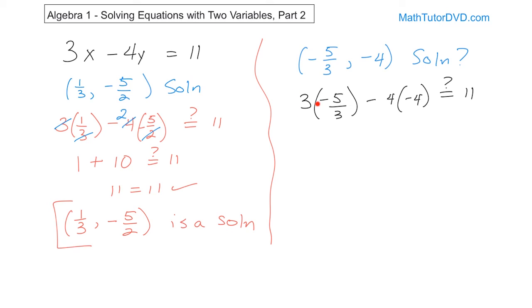Now, we look here at the first one. We have a 3 on the top and a 3 on the bottom. So we can immediately cancel those. And all we're going to have left is -5. Here we have negative times negative gives you positive 16. 4 times 4 is 16. Is that equal to question mark 11? And you should be able to say that -5 + 16 is 11 equals 11. Yes. So we say -5/3, comma, -4 is a solution.